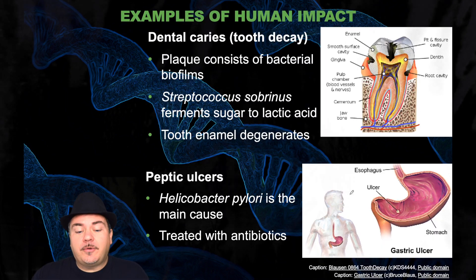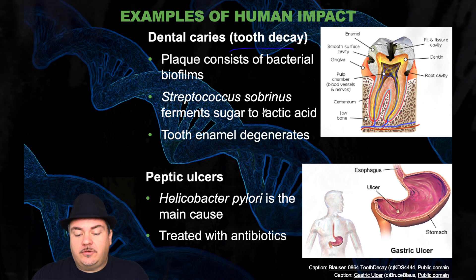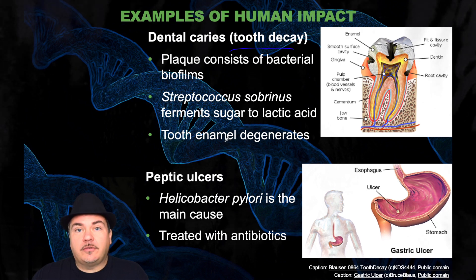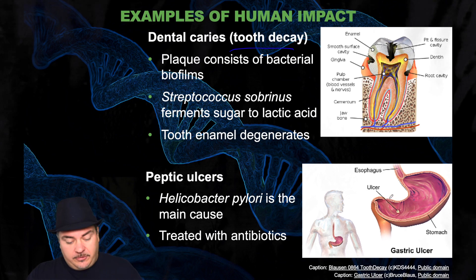Another example is tooth decay. Plaque consists of bacterial biofilms. This bacteria ferments sugar to lactic acid, which then degrades the tooth enamel and causes tooth decay. Or peptic ulcers — Helicobacter pylori is the main cause, and it can be treated by antibiotics.